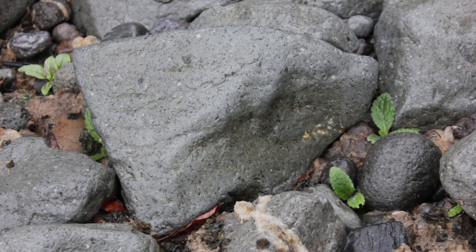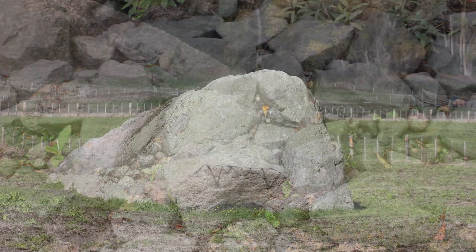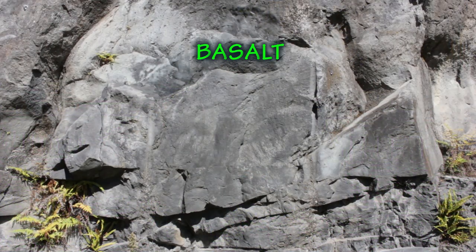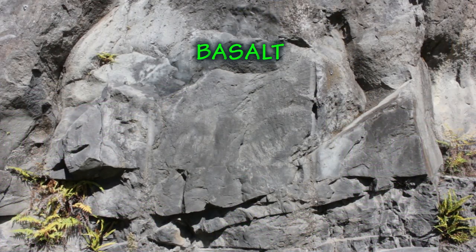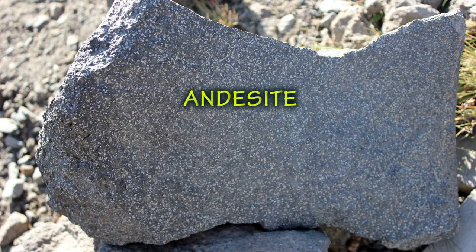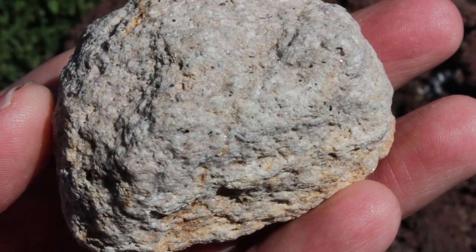Types of magma are determined by the chemical composition of the magma. Three general types are recognised: basaltic magma, acidic magma, and rhyolitic magma.